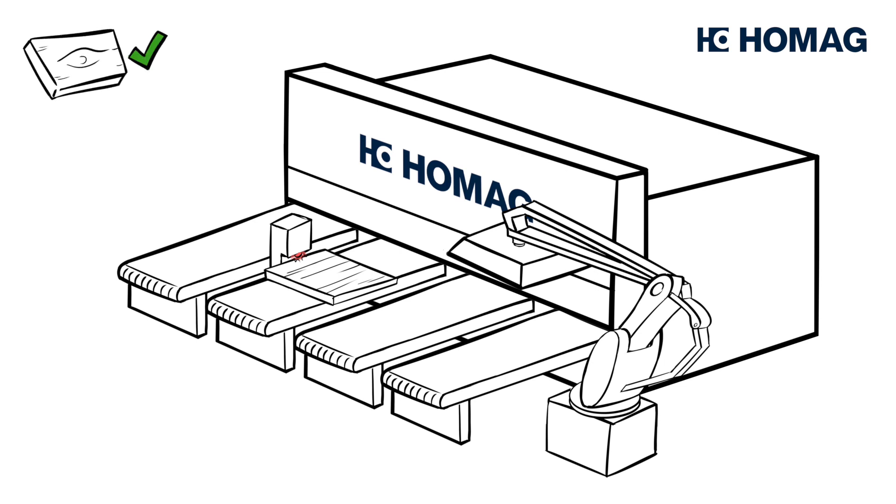If the breakouts exceed a predefined warning threshold, Henry is informed via a warning message. If they even exceed a defined limit, further production is stopped.